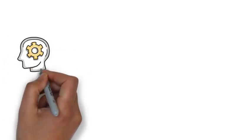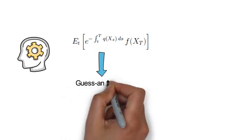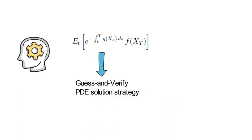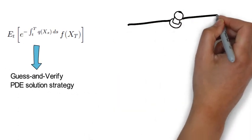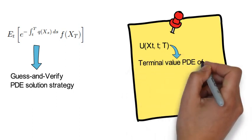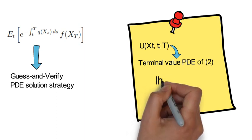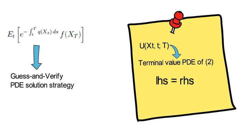So basically, what the Feynman-Kac theorem says is that if you want to compute a conditional expectation as denoted here, where X follows an Ito SDE, then you can apply a guess and verify PDE solution strategy. That means you can guess what the solution of the conditional expectation, which we denote as U of X_T, T, looks like. You plug that guess into the terminal value PDE of the Feynman-Kac theorem. And if the left hand side of that PDE problem coincides with the right hand side, then you verify that the guess is correct.